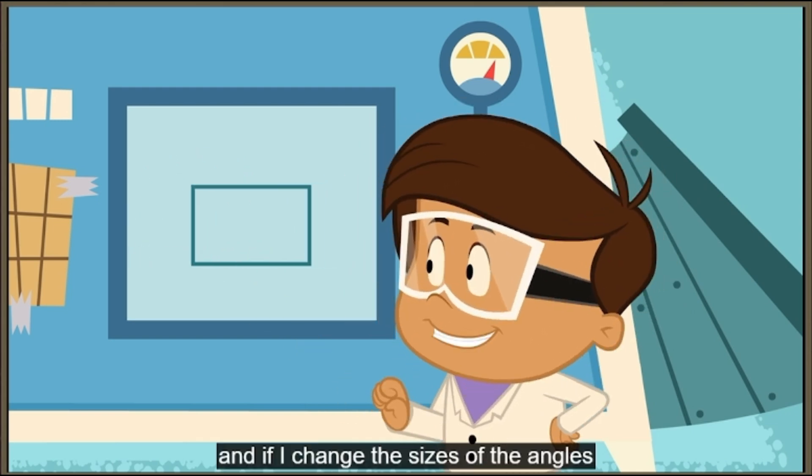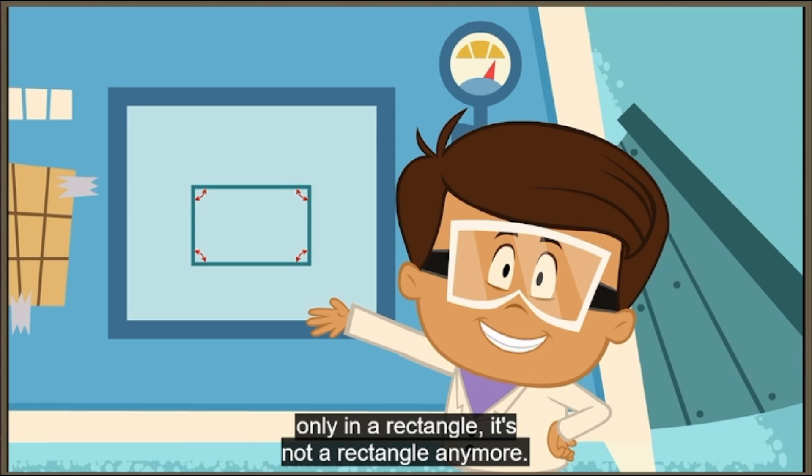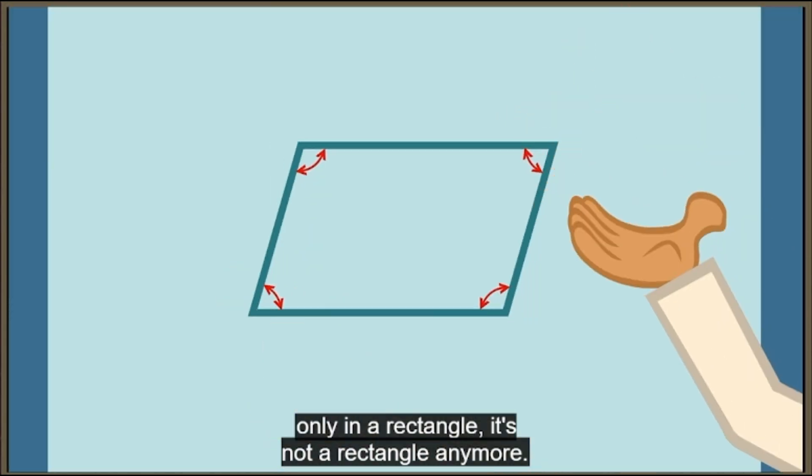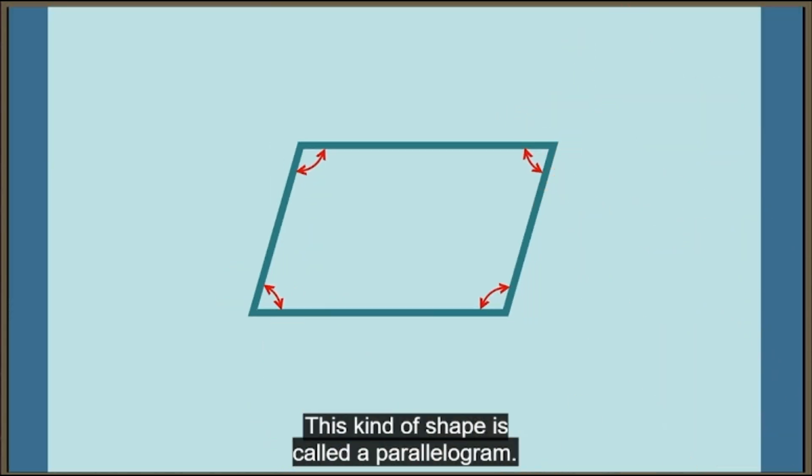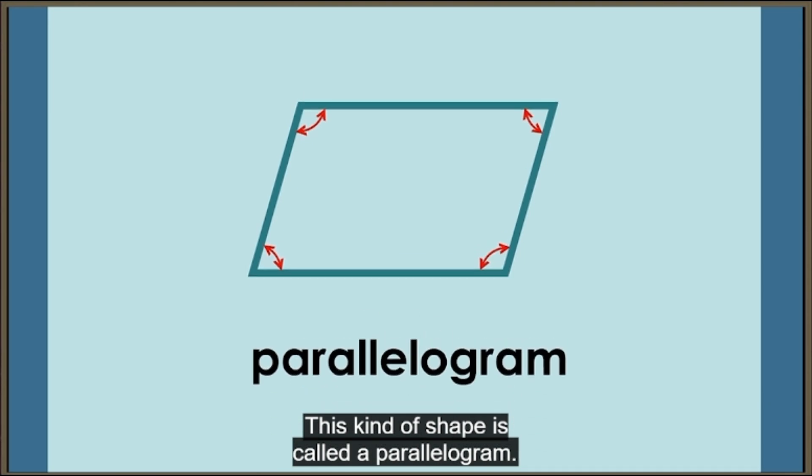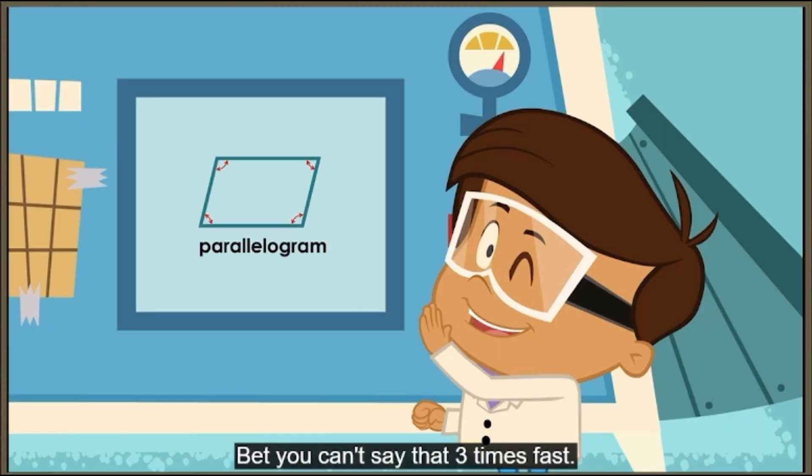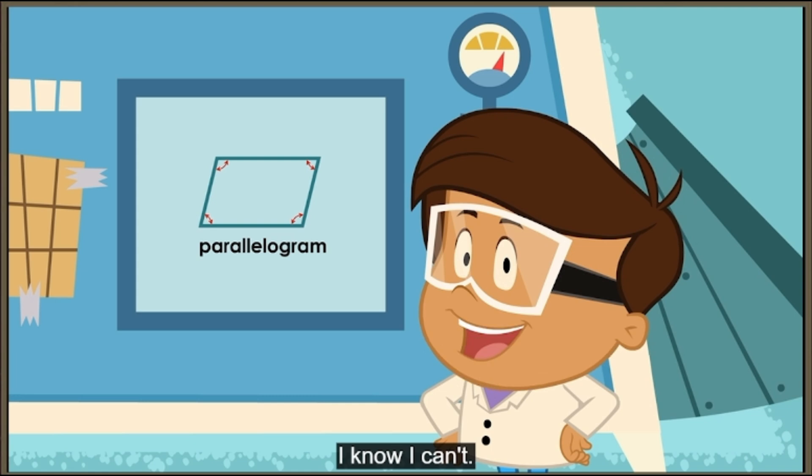And if I change the sizes of the angles only in a rectangle, it's not a rectangle anymore. This kind of shape is called a parallelogram. Bet you can't say that three times fast. I know I can't.